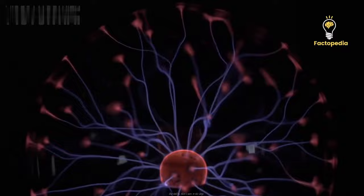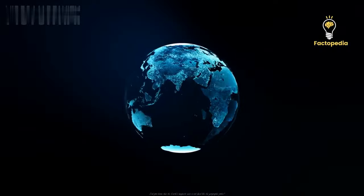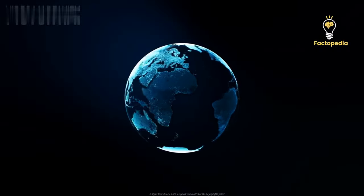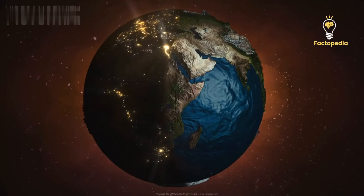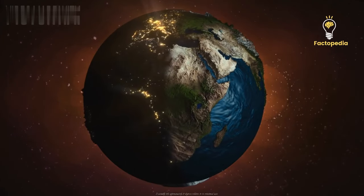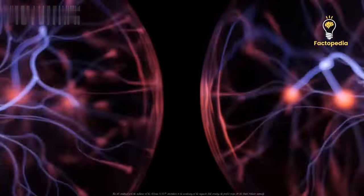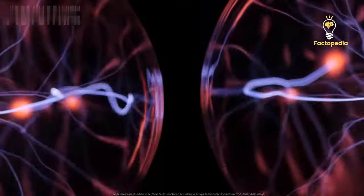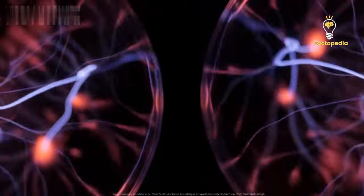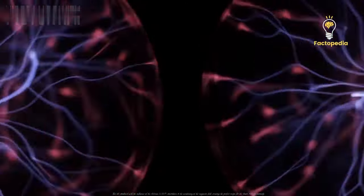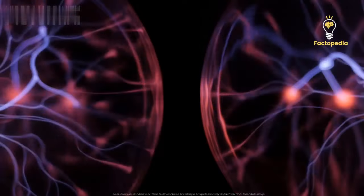But hold on, there's more to this story. Did you know that the Earth's magnetic axis is not fixed like the geographic poles? It actually tilts approximately 11 degrees relative to its rotational axis. This tilt, combined with the influence of the African LLSVP, contributes to the weakening of the magnetic field, creating the perfect recipe for the South Atlantic anomaly.